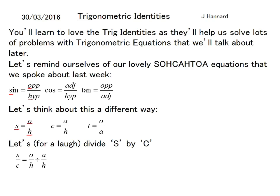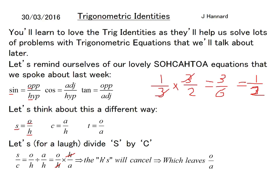But how do you divide fractions? You flip the second one over and call it a times. So we've got O over H times H over A. What happens to those H's is they cancel, because if you think about this, one third times three halves equals, well, one times three is three, three times two is six, and that actually cancels down to a half. So the H's will cancel, which leaves O over A.